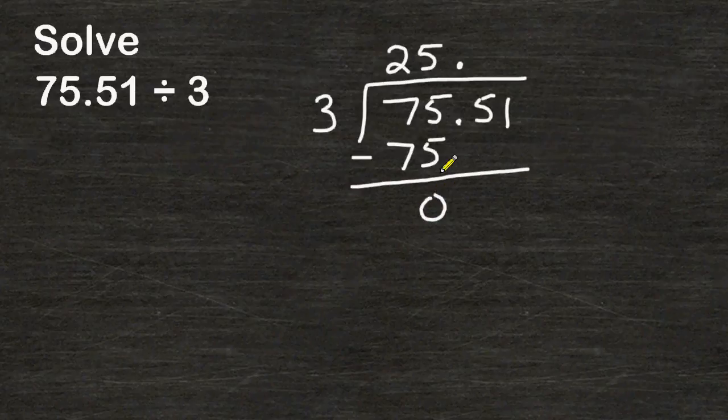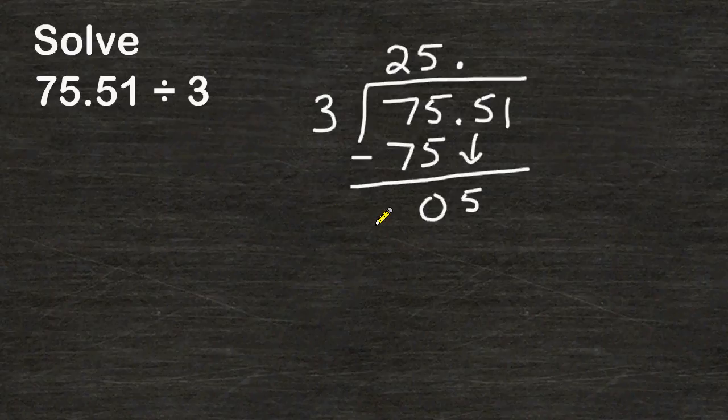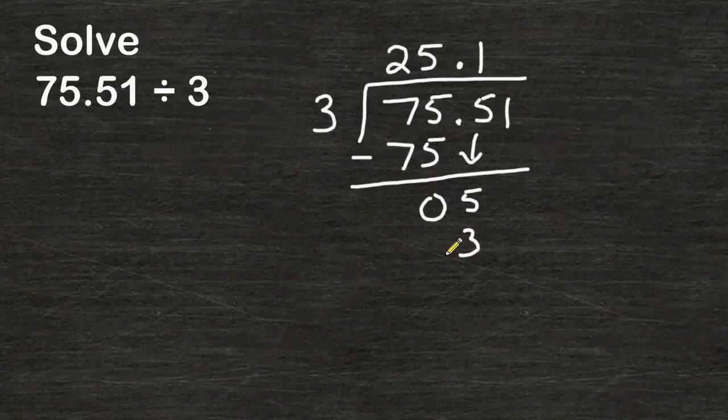The next thing we do is bring down whatever digit is in the next place value so we drop this 5 down and we divide 3 into 5 which can fit in there one time and 1 times 3 is 3 and the difference of 5 and 3 is 2.